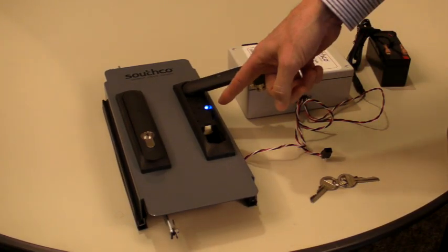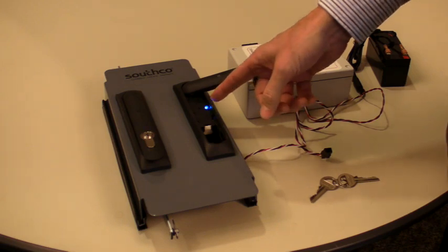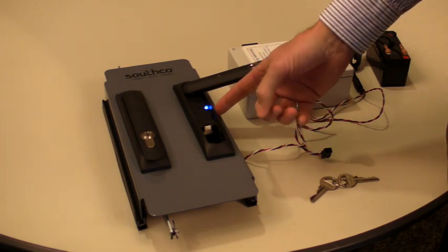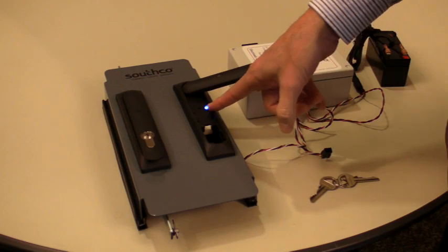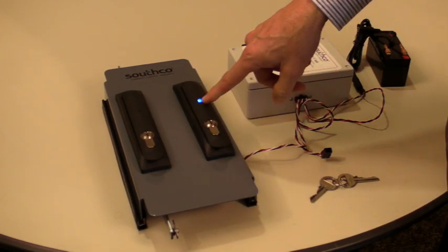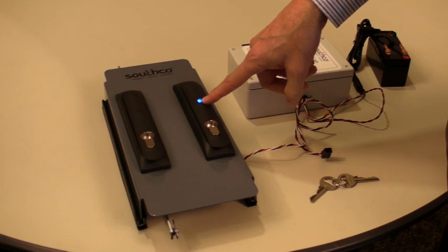You'll notice it has an LED which is actually a light pipe from an internal printed circuit board. It comes up through the housing, so when the handle is open it's visible. If the handle is closed, it's still visible through the handle, again through a light pipe.